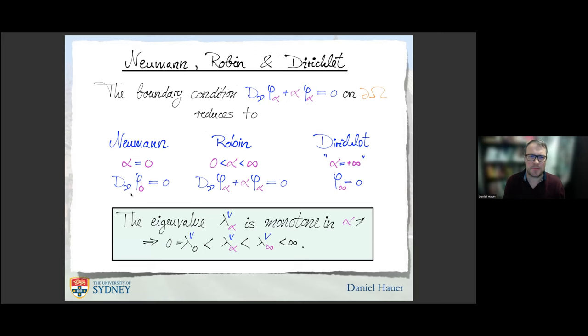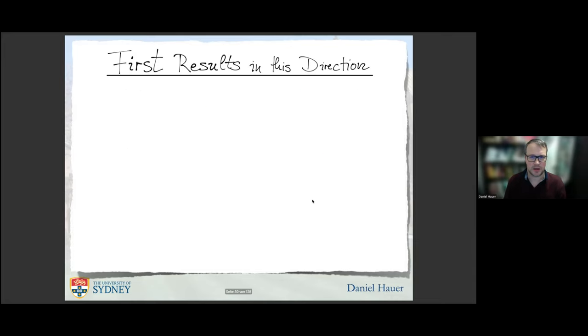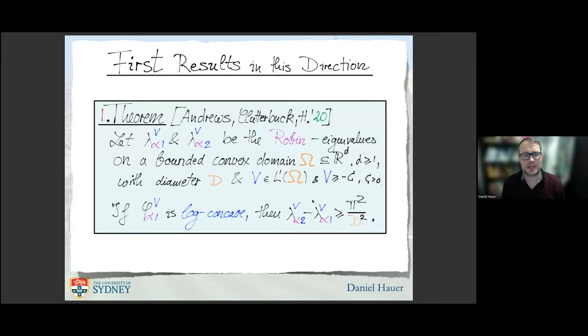When alpha is zero, we come to homogeneous Neumann boundary condition. And when we divide by alpha, which is strictly positive, and let alpha tend to infinity, we recover from Robin actually Dirichlet boundary condition. That's the reason I call alpha equals plus infinity the Dirichlet case. The eigenvalues for Neumann, Robin and Dirichlet have the beautiful monotonicity condition that when alpha increases, the eigenvalue for all alpha increases. Here you have the Neumann eigenvalue, and on the other extreme, you have the Dirichlet eigenvalue. In the middle, you have the Robin eigenvalue.